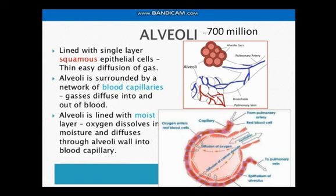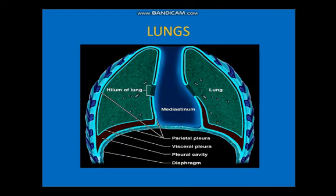The thin flat cells reduce the distance across which diffusion must occur. Collagen and elastin proteins are also present in the walls, allowing the elasticity of alveoli — meaning they can expand and recoil easily during breathing. We move on to the external structure of the lungs. There are two lungs in the human body, and the base of the lungs rests over the muscular sheet called the diaphragm.